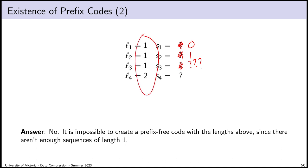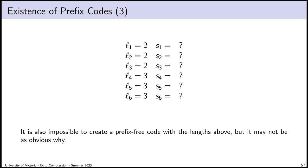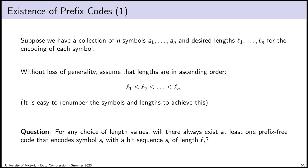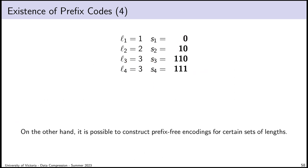I want to tackle this intuitively — not a full proof, but enough justification that we understand why this works, since the result is important. Notice in my encoding: S1 is just '0', which means I'm not allowed to start any other encoding with '0'. S1's encoding has captured all possible bit strings beginning with zero — they are no longer available for use. Similarly, S2 begins with '10', capturing every bit sequence beginning with '10'.